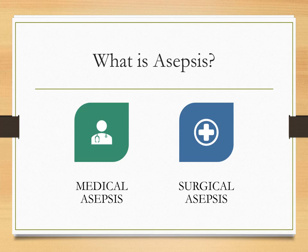So what is asepsis? Basically, asepsis is the absence of illness-producing microorganisms. If something is aseptic, it's very clean — there are no germs, no bacteria. The way this is achieved is primarily through hand hygiene. Asepsis really means that something is very clean and does not have any microorganisms that would cause somebody to be ill.